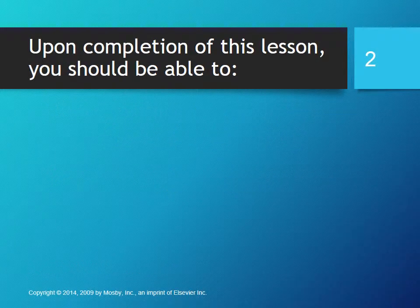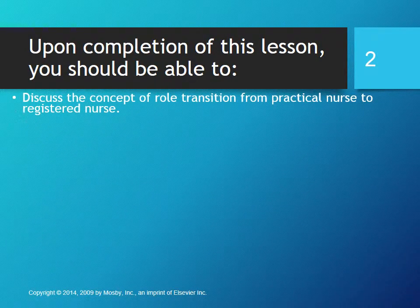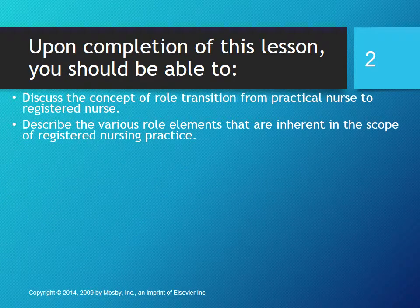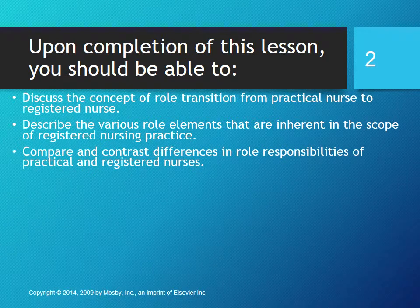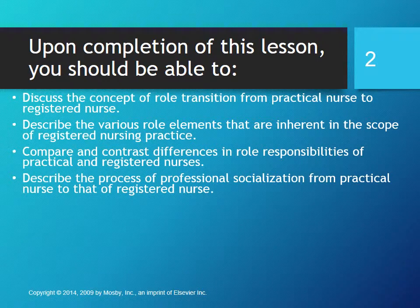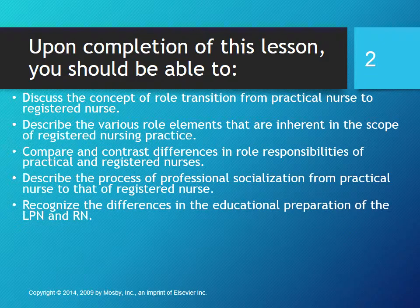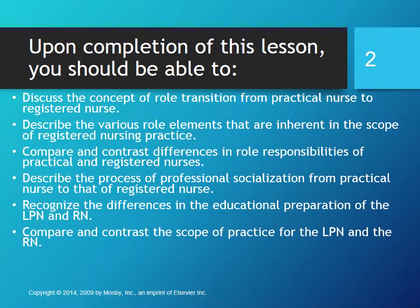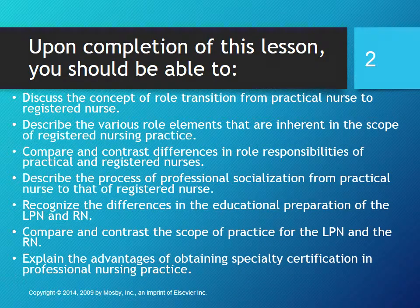Upon completion of this lesson, you should be able to discuss the concept of role transition from practical nurse to registered nurse, describe the various role elements inherent in the scope of registered nursing practice, compare and contrast the differences in role responsibilities of practical and registered nurses, describe the process of professional socialization from practical nurse to registered nurse, recognize the differences in the educational preparation of the LPN and RN, compare and contrast the scope of practice for the LPN and the RN, and explain the advantages of obtaining specialty certification in professional nursing practice.